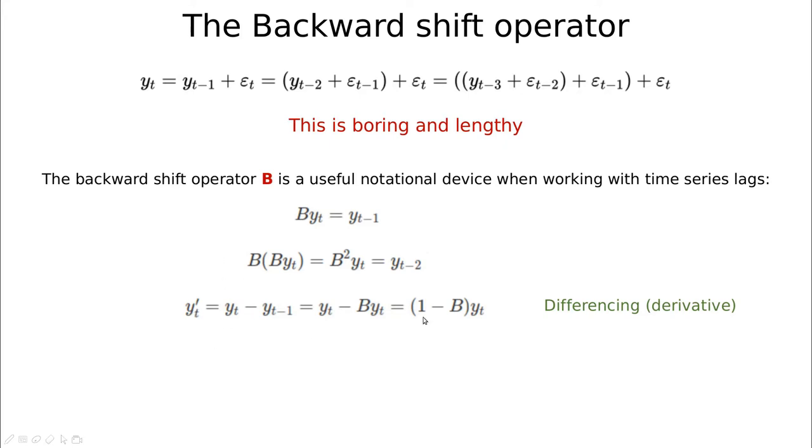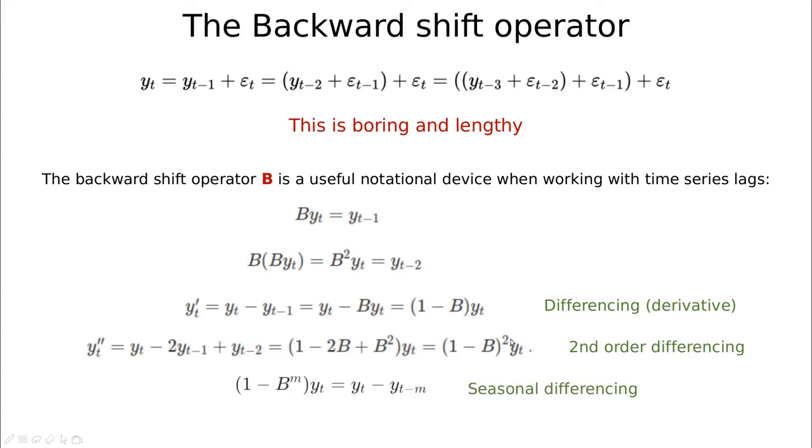So for instance taking the derivative is going to be (1-B)y_t or for instance second-order differencing is going to be (1-B)^2. So you can see that this is very handy and actually we can do something more complex like seasonal differencing. For instance imagine that m is last week or last month or last quarter or whatever. Then taking the derivative between this value and the last period is going to be simply (1-B^m). The second seasonal derivative is going to be (1-B^m) bracket squared and so on and so forth.